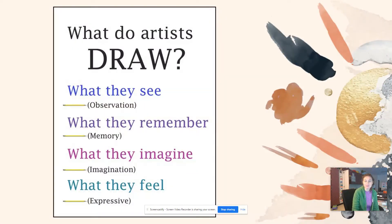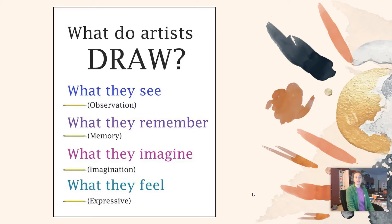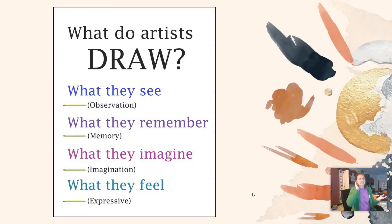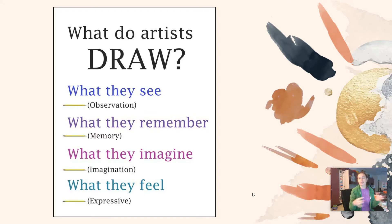Hi, so today we are going to talk about where we get our ideas and inspiration from. There's a common question: what do artists draw? Some basics are what they see — observations — what they remember, drawing a memory, what you can imagine, and what you feel. Maybe I want to have an expression of feeling happy in my artwork, so I might draw something that makes me happy.